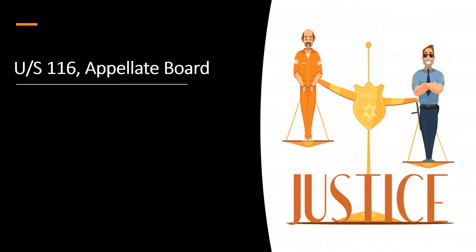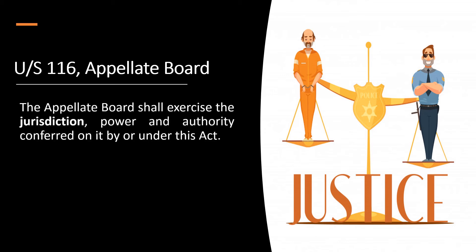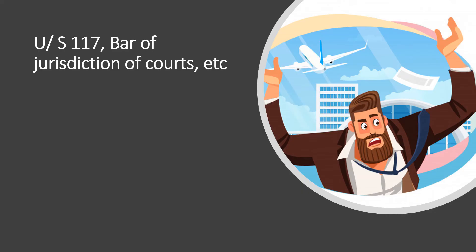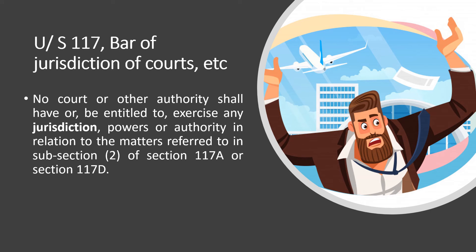Section 116 on the appellate board states that the appellate board shall exercise the jurisdiction, power, and authority conferred on it by or under this Act. Under Section 117, bar of jurisdiction of courts, the section says that no court or other authority shall have or be entitled to exercise any jurisdiction, powers, or authority in relation to the matters referred to in subsection 2 of Section 117A or 117D.